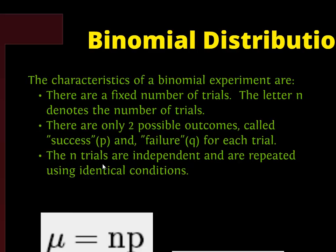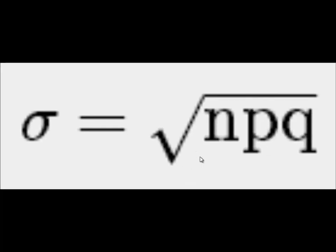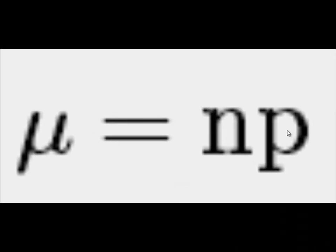We have n trials. That's how many times we've done this. When we look at this, we can get our mean or our expected value, which is how many times we do it times the probability of success. That's how we find our expected value. The standard deviation, we have the square root of the number of times we tried it times our successes times our probability of failure.